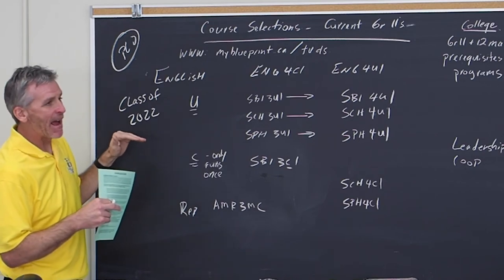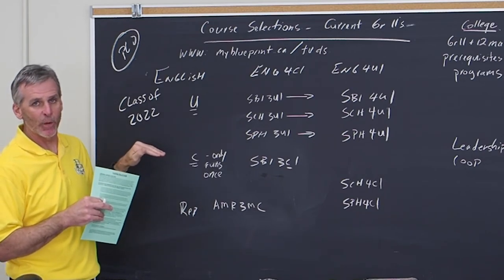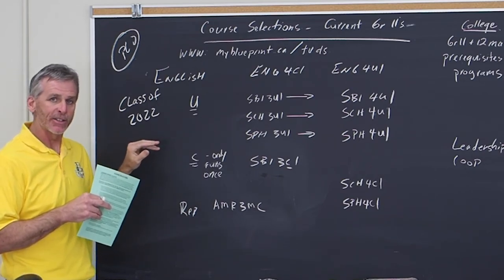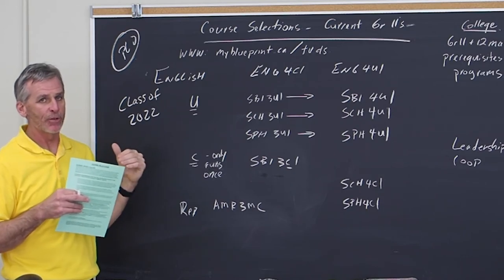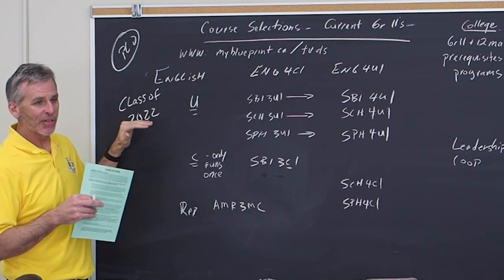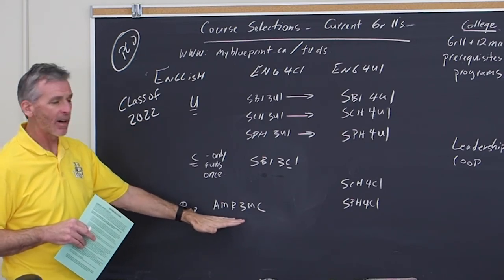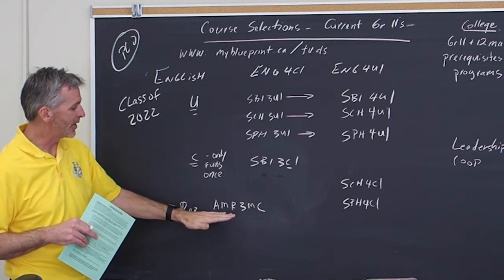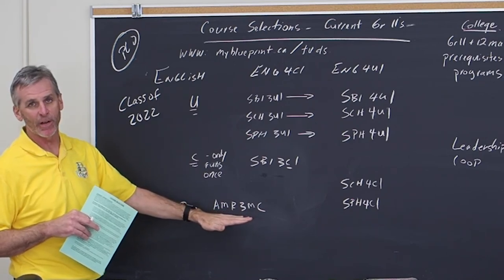So I have a maximum of six credits. If I have 24 credits in the bank, you are allowed to take a spare in grade 12. That's up to you and your family. If you are signing up and you have six and you want repertoire, repertoire is an extra credit. So it is AMR 3MC for the grade 12 level.